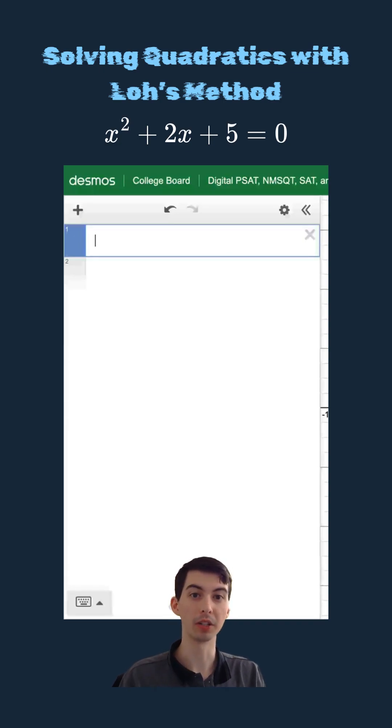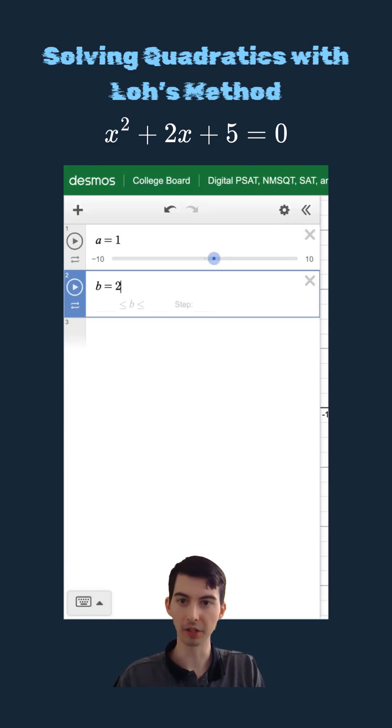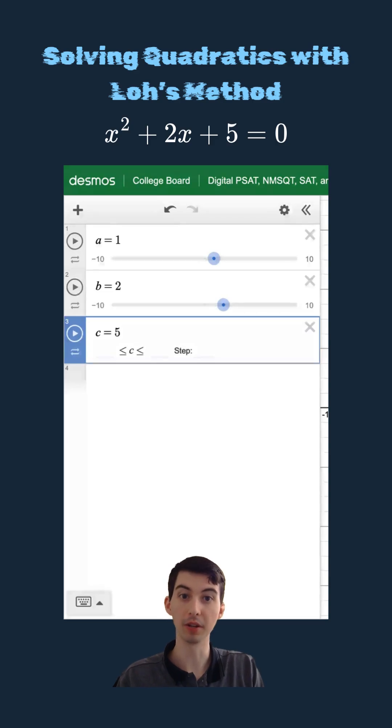Let's solve this quadratic equation using what I call Loh's method. So first, we want to tell Desmos that my a value is 1, my b value is 2, and my c value is 5.